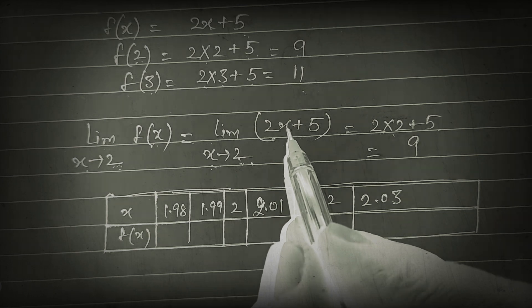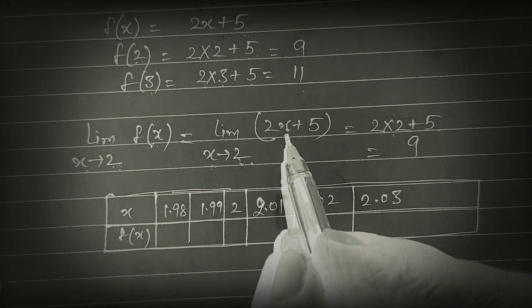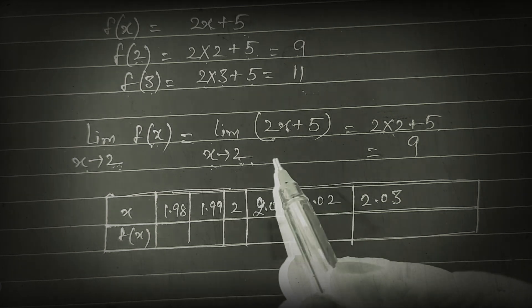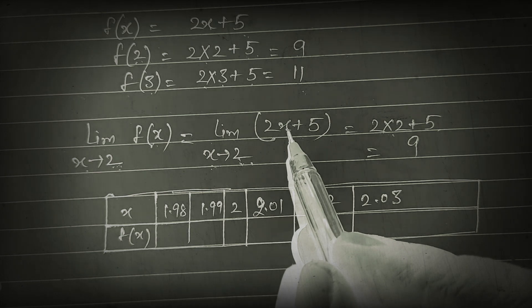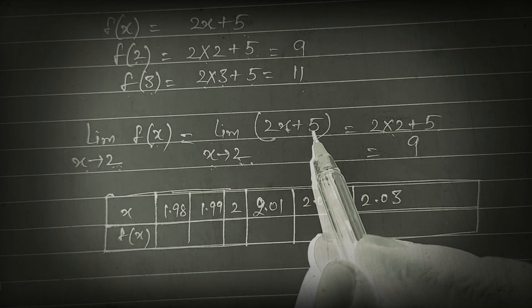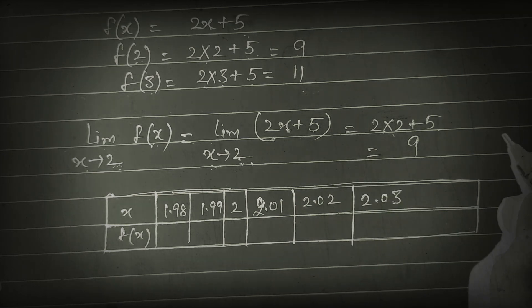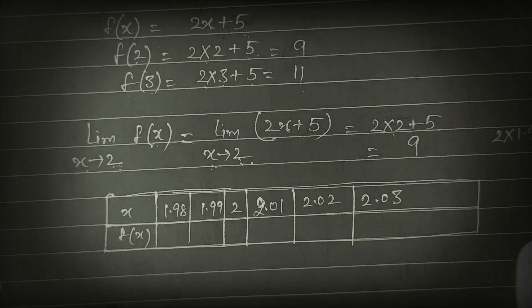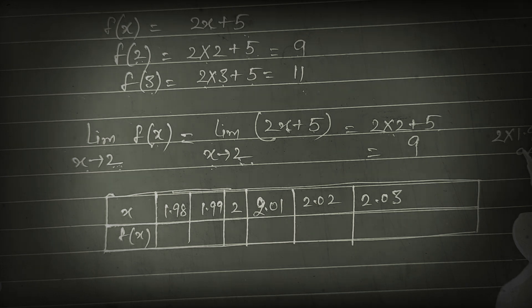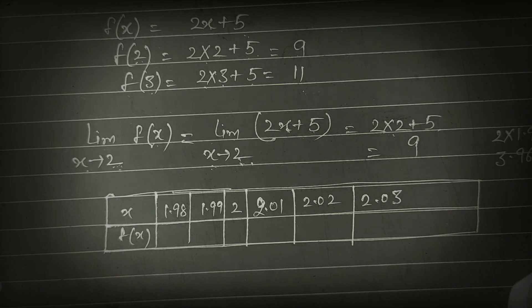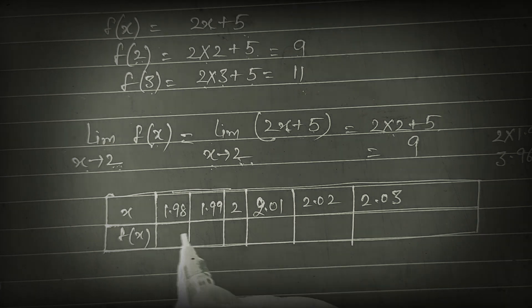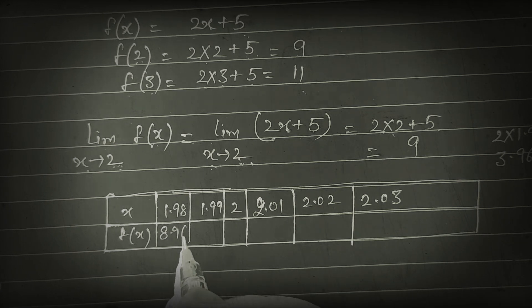Suppose we put x = 1.98 in place of x. So it is 2×1.98 + 5 = 3.96 + 5, which is approximately 8.96.